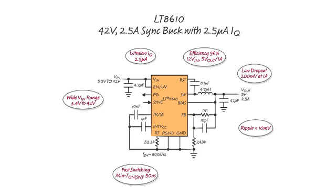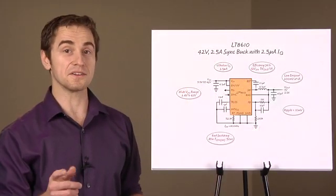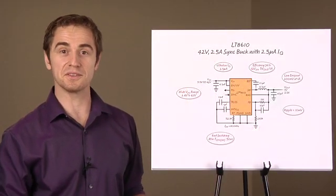The LT8610 comes in an MS16E package and only requires resistors, capacitors, and one inductor to complete the whole circuit.